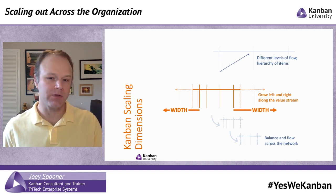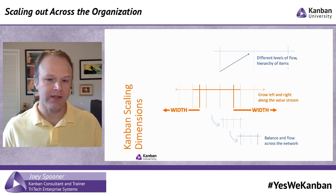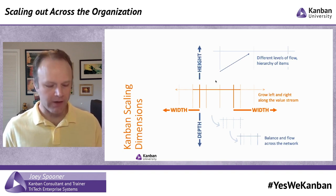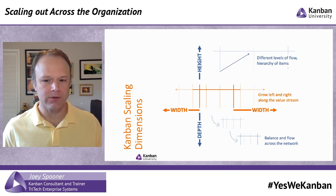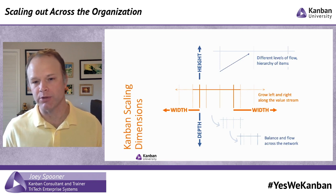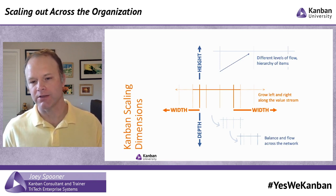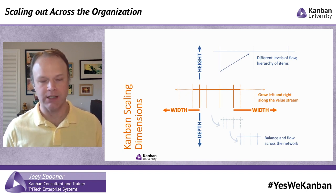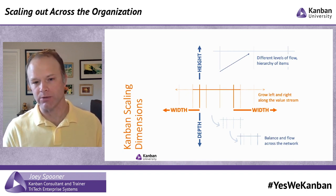You can also dive deeper into your system — you can go further down vertically. As you go deeper into your Kanban system, you're going to find that you can get further into identifying subsystems or subservices that you rely on from your value stream perspective. This is really great because from there you can balance and flow across the network and get some good, solid delivery that way.